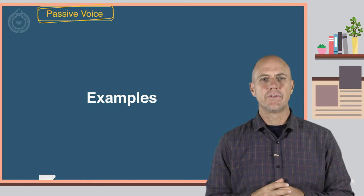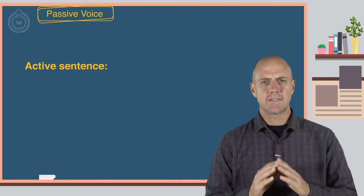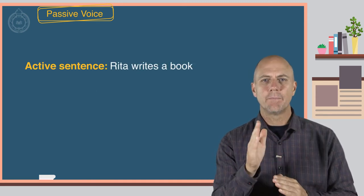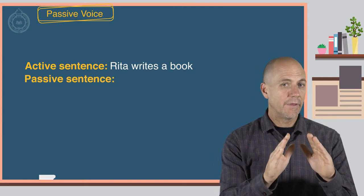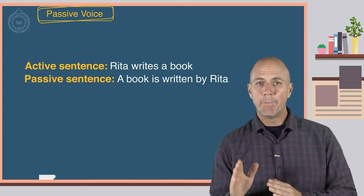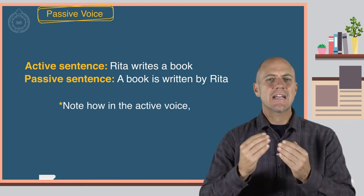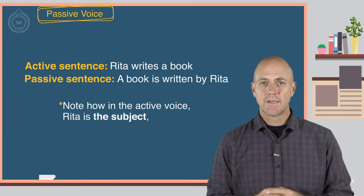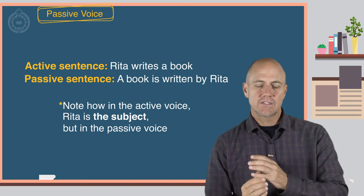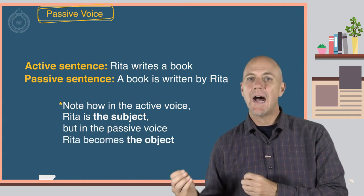Here are some examples. Active sentence: Rita writes a book. The passive sentence: A book is written by Rita. Note how in the active voice, Rita is the subject. But in the passive voice, Rita becomes the object.